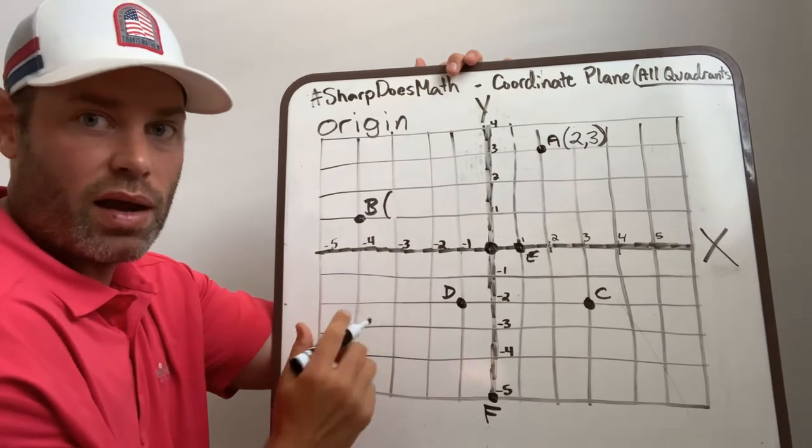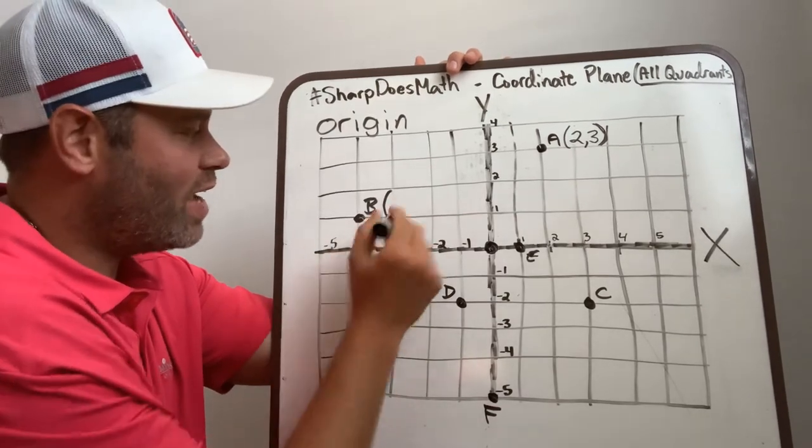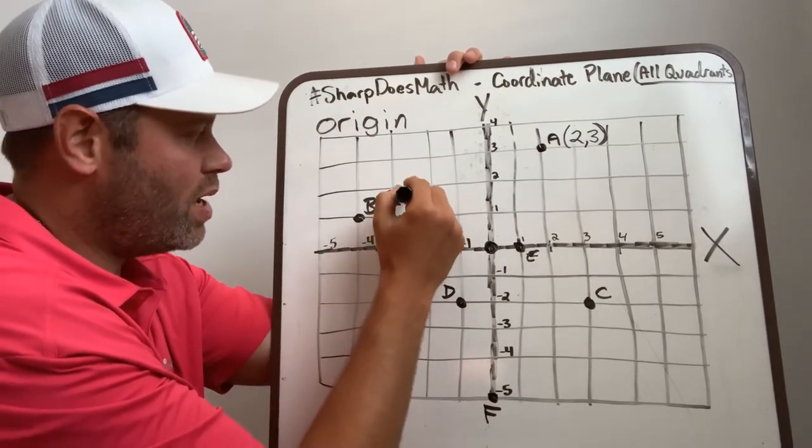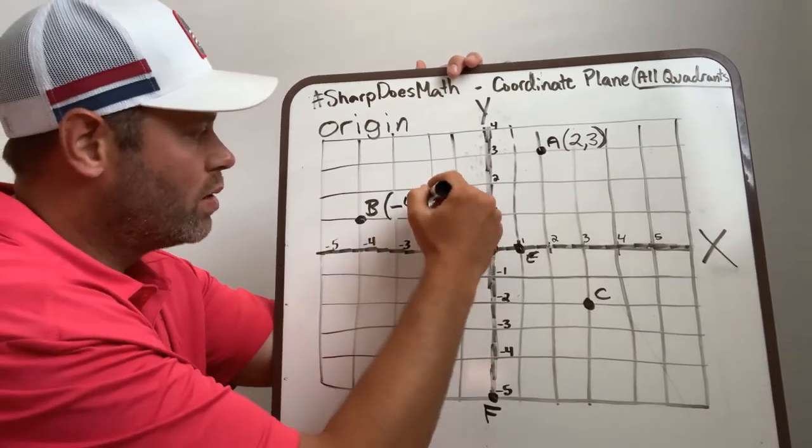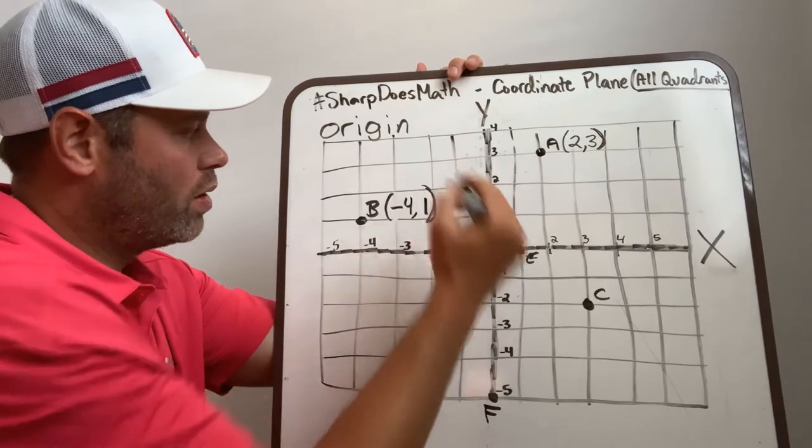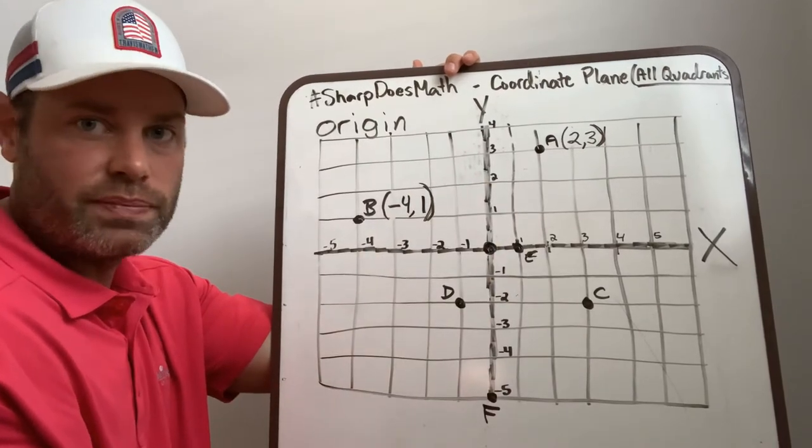For B, how I would write that—really important—negative 4. So I need to put my negative symbol. And then I went up to the 1. So negative 4, 1.